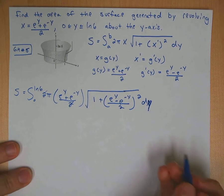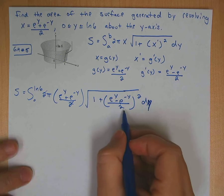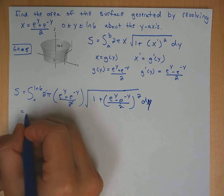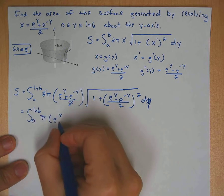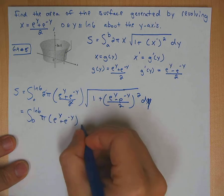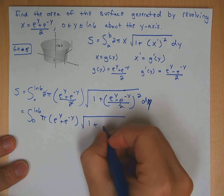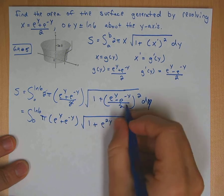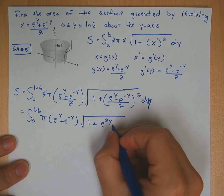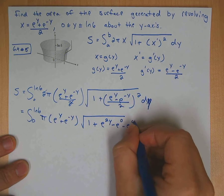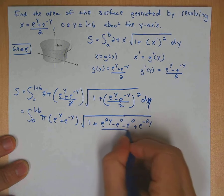Okay, so the 2s here would cancel. I'm going to square this one out in the next step. 0 to ln of 6, π times e to the y plus e to the negative y, square root of 1 plus—okay, so square the top: e to the y times e to the y, e to the 2y. The middle two terms would be these two times each other. So when you add the exponents there, y and negative y would be 0. So it would be minus e to the 0, minus e to the 0. And then this one would be plus e to the negative 2y all over 4.